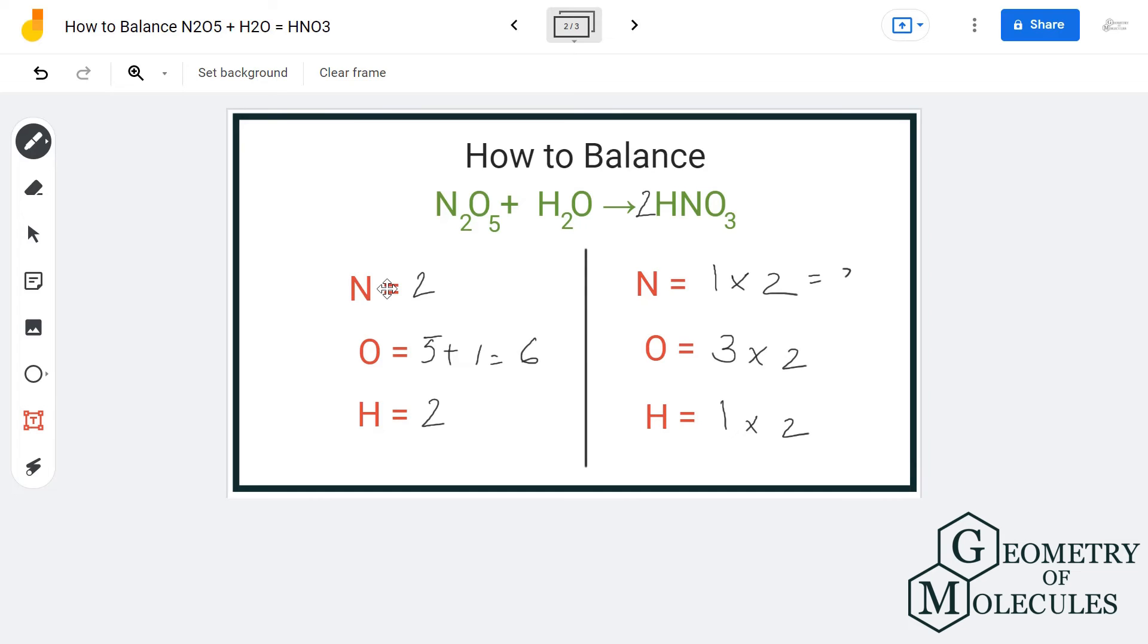Two hydrogen atoms on the product side and six oxygen atoms. As a result, this equation is completely balanced as we have the same number of atoms for nitrogen, hydrogen, and oxygen on both reactant and product sides.